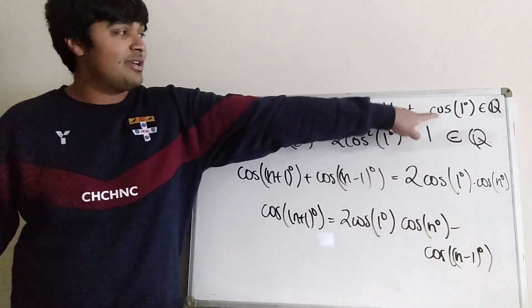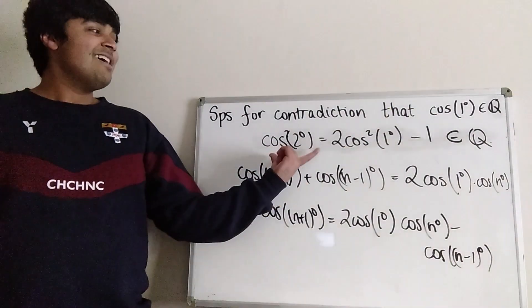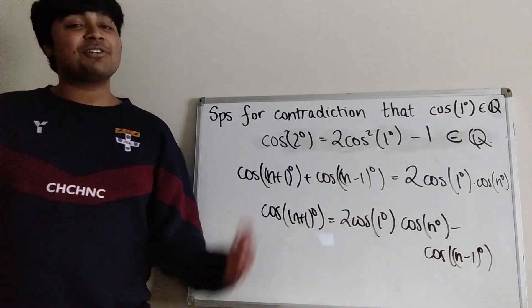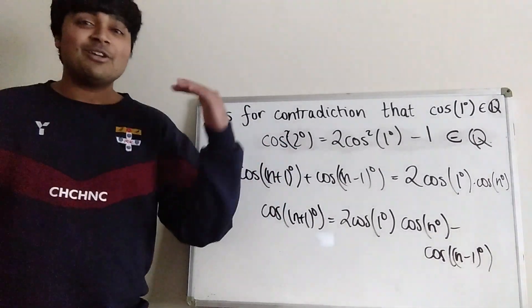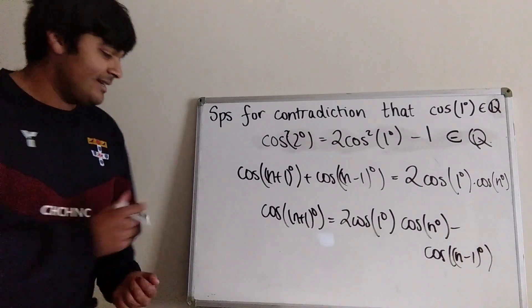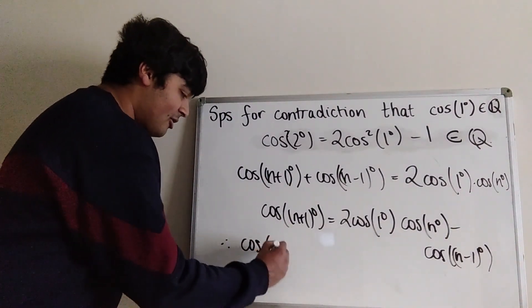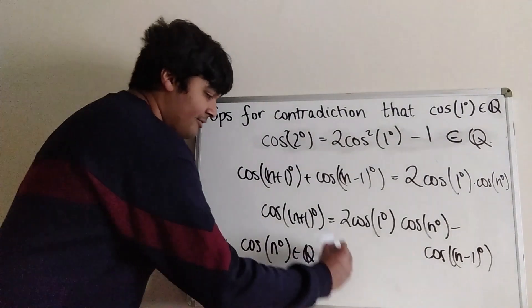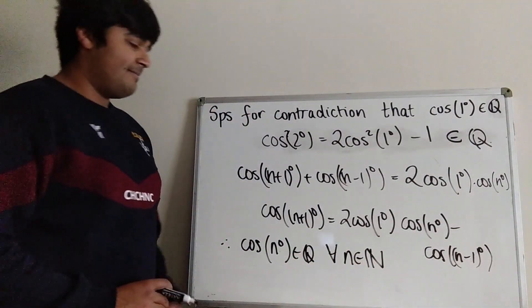We've already assumed that cosine of one degree is rational and cosine of two degrees is rational. That means by induction cosine of three degrees is rational, cosine of four degrees, cosine of five degrees, and so on. Therefore cosine of n degrees is rational for all positive integers n.